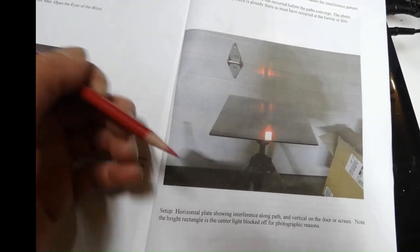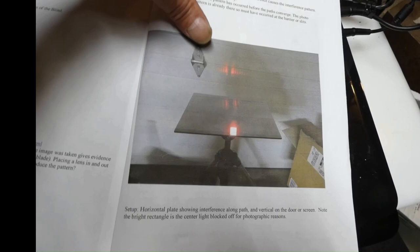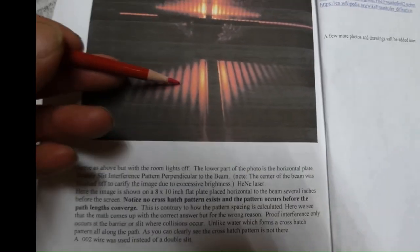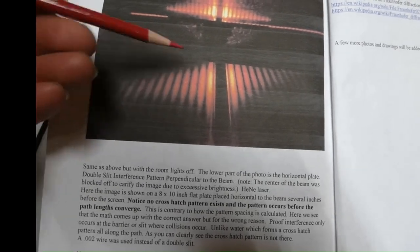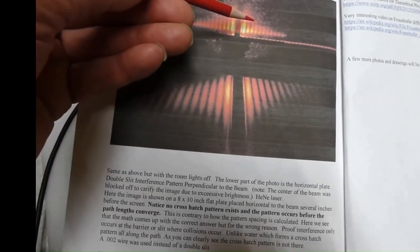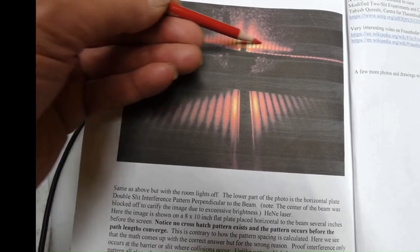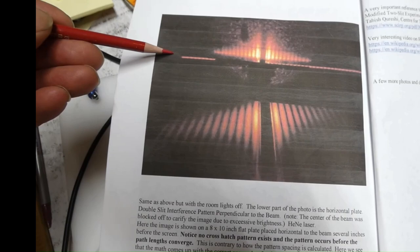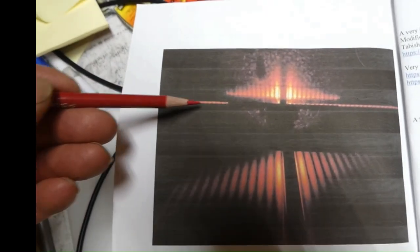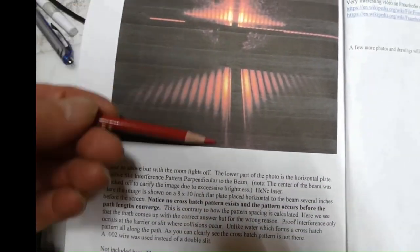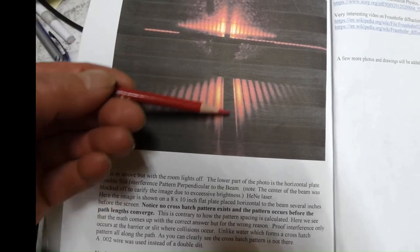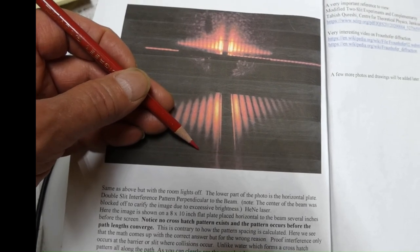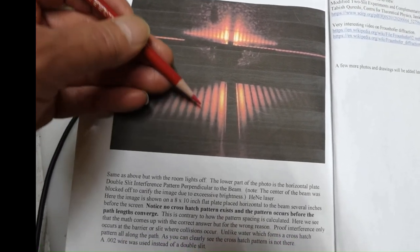This is the flat plate. There's the, this is actually a reflection off the flat plate. This is actually the pattern right here, that one right there, the long one. This is horizontal to the beam. There's nothing interference, no pattern in here like you see with water waves.